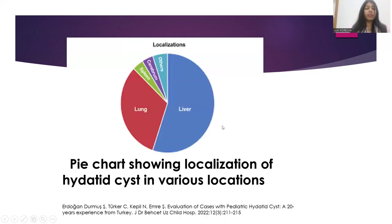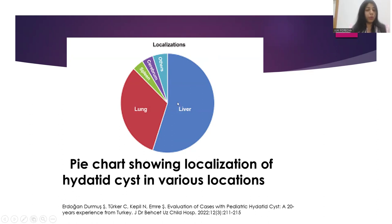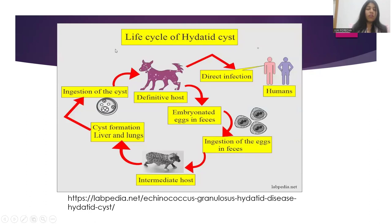This pie chart shows the localization of hydatid cysts. The majority of cysts are encountered in the liver, but the spleen, cerebrum, and other sites of the body, though in lesser numbers, are also prone to hydatid cysts.